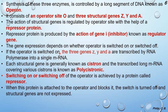When the operator is switched on, the three genes Z, Y, and A are transcribed by RNA polymerase into a single mRNA. Each structural gene is generally known as a cistron, and the transcribed long mRNA covering various cistrons is known as polycistronic mRNA.